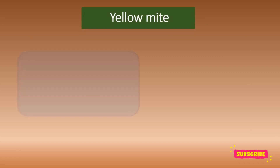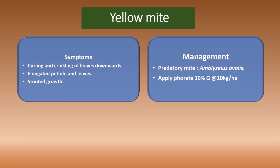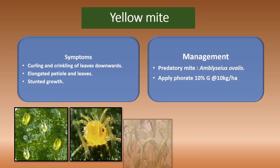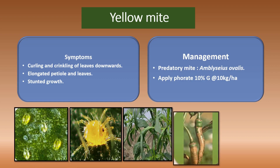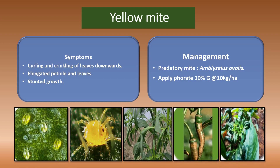Coming to yellow mite — symptoms and management. The crop affected by yellow mite will show crinkling and curling of leaves downwards — note that in thrips it curls upwards, but in mites it curls downwards. Elongated petioles on the leaves will be seen and stunted growth will also be observed.